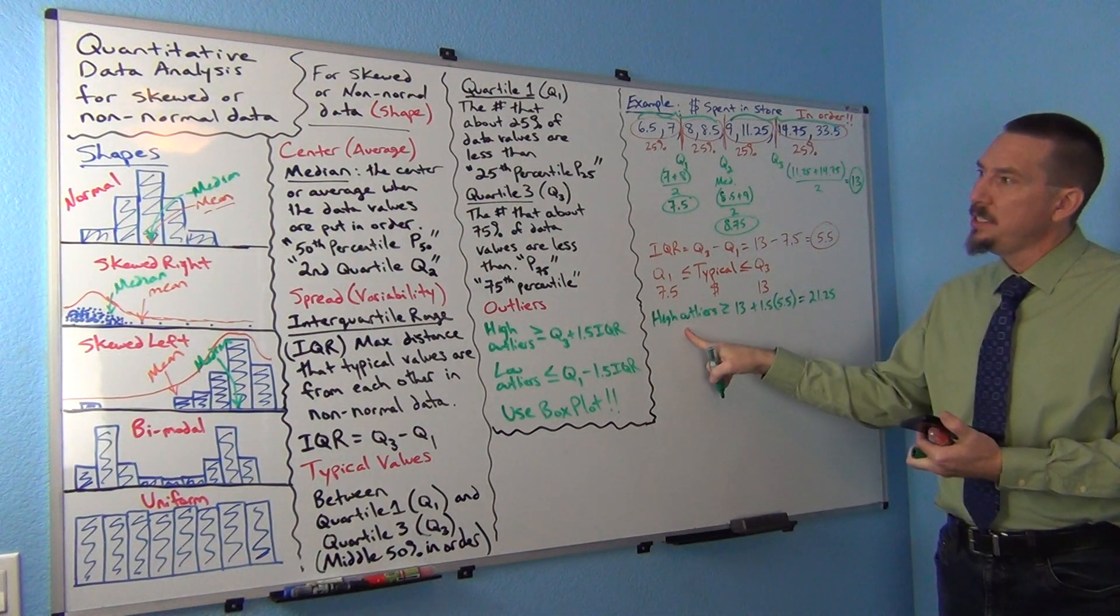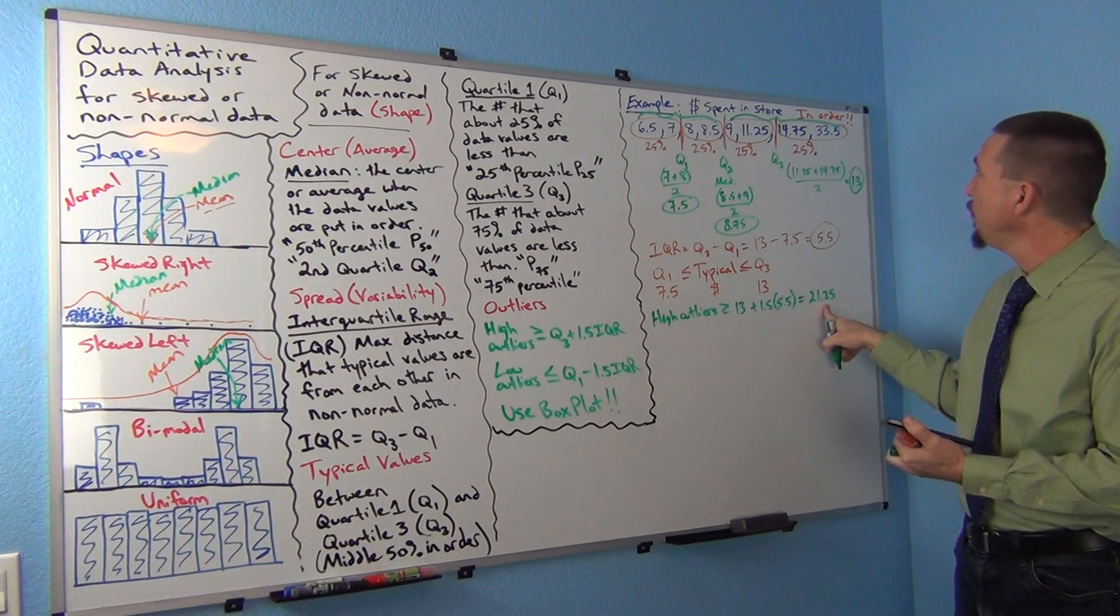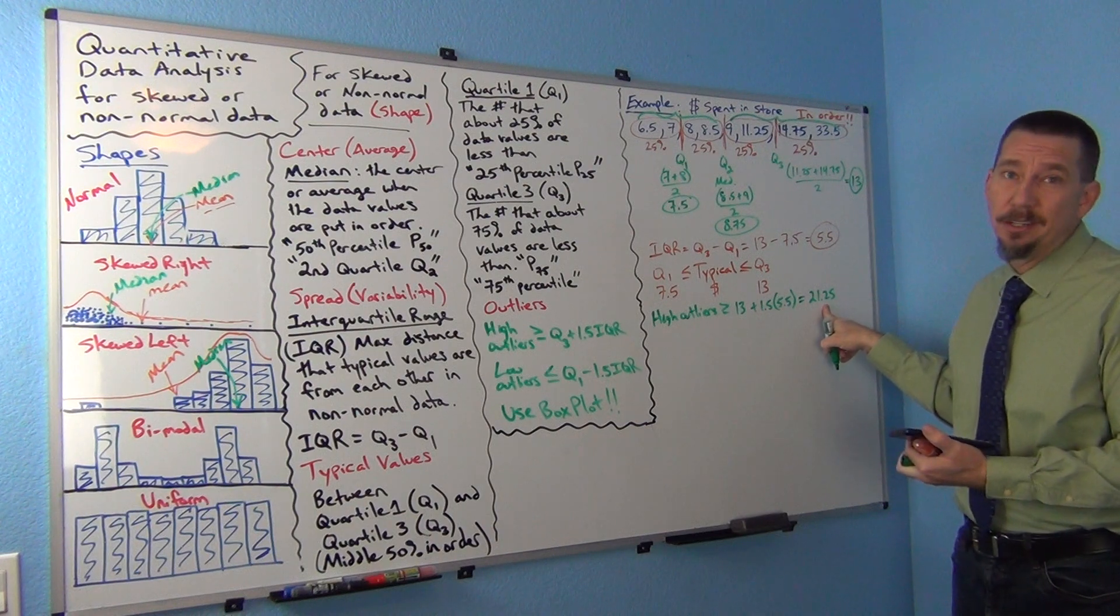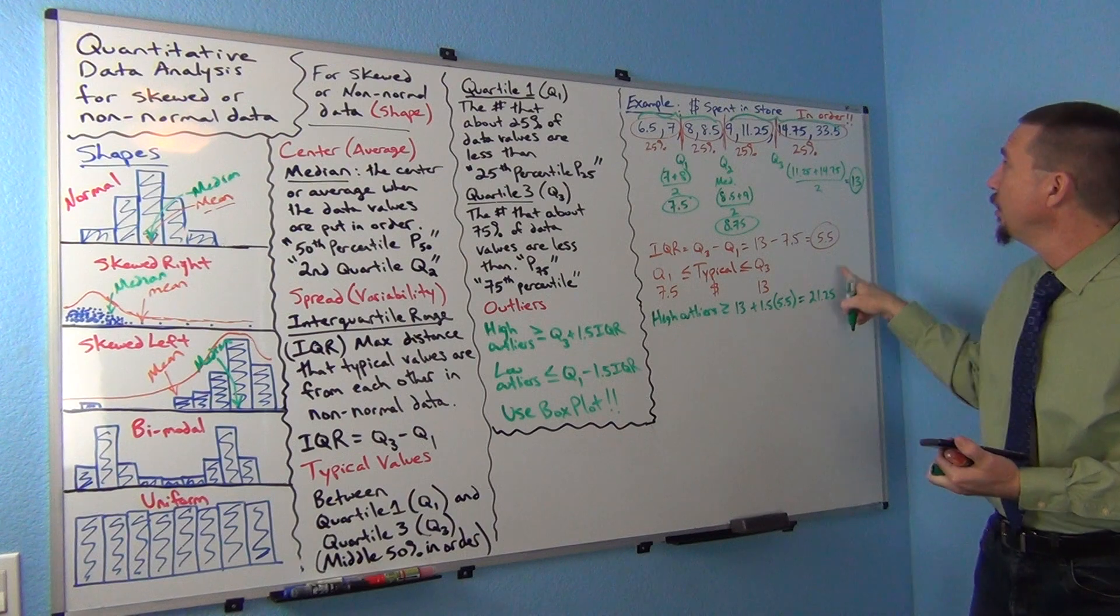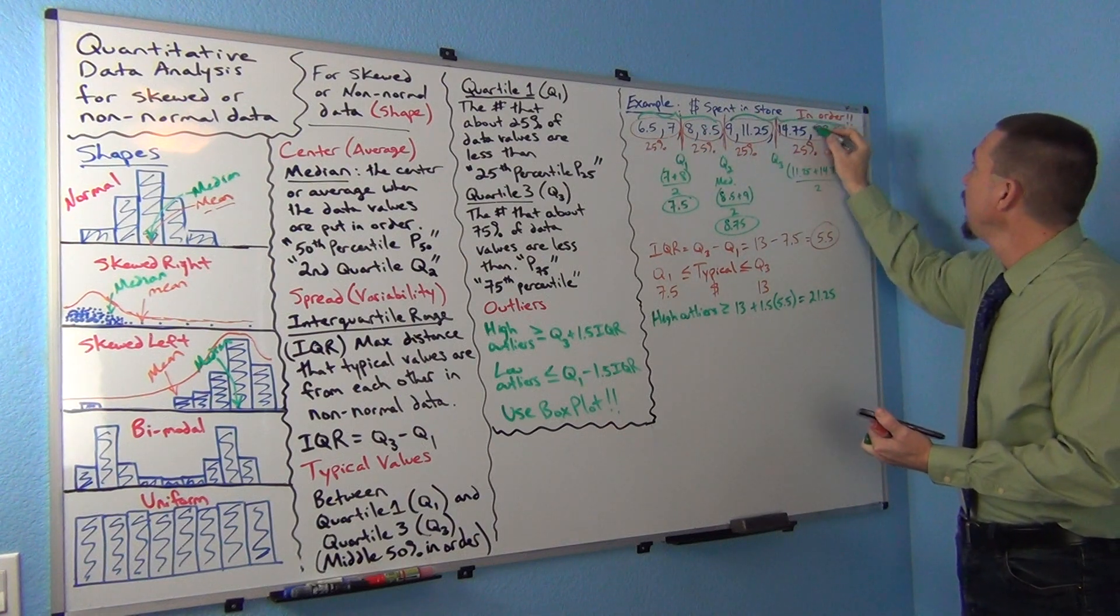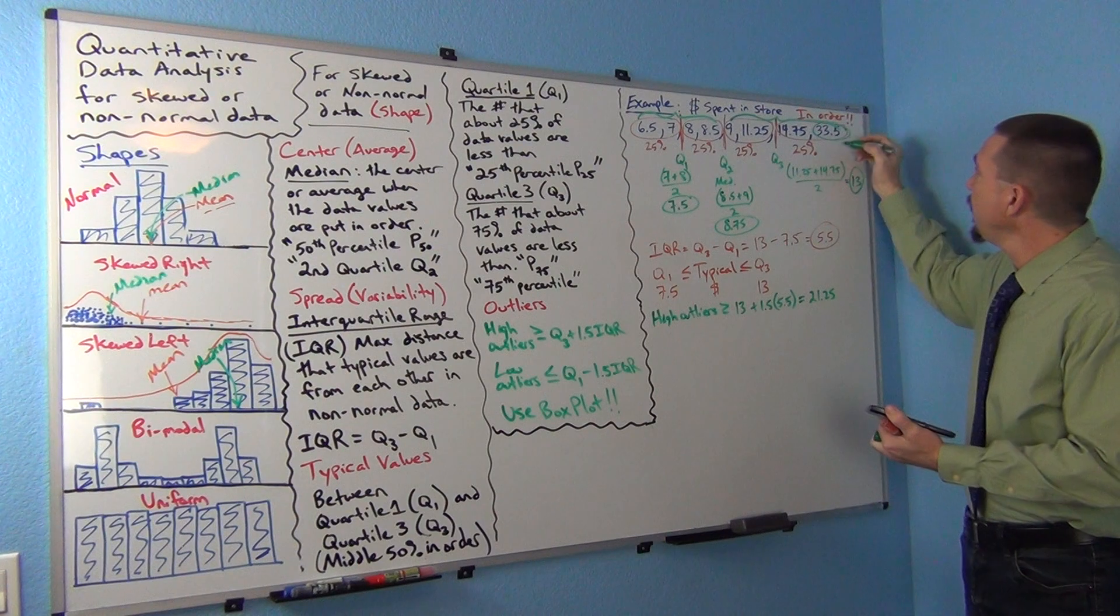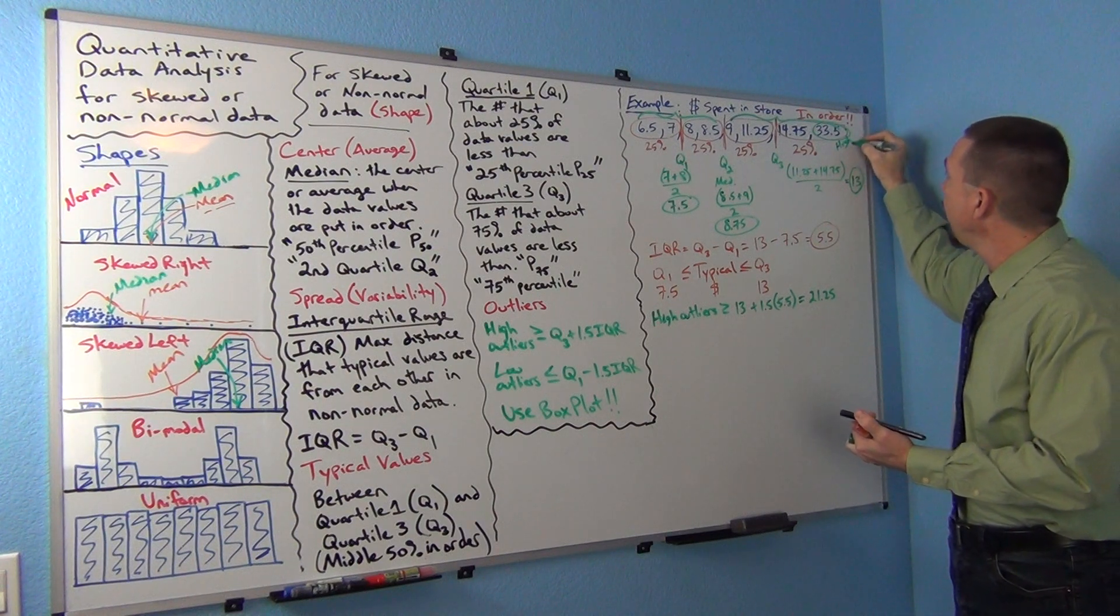So any values in the data set that are above 21.25 are going to be considered high outliers or unusually high values. Well, are there any? Yes, there is. Right here, this one. So this one right here is going to be a high outlier.